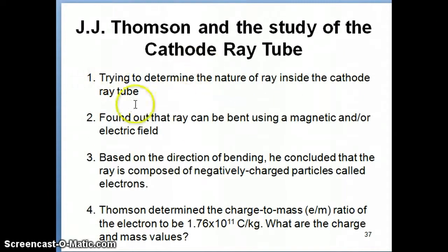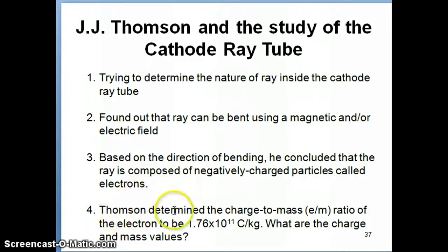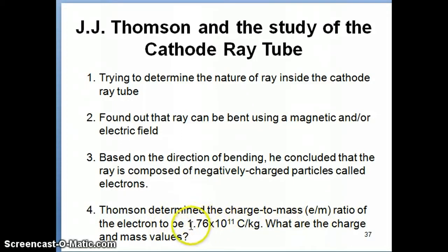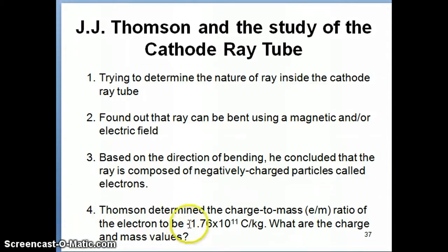Here's a brief summary of what Thompson did, which we talked about in the previous video. Basically, at the end of his experiment he discovered that the cathode ray is composed of negatively charged particles, which were later called electrons. Thompson was able to determine something called the charge-to-mass ratio of the electron, and the value is negative 1.76 times 10 to the 11th Coulombs per kilogram.